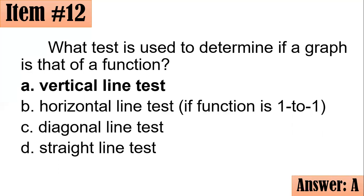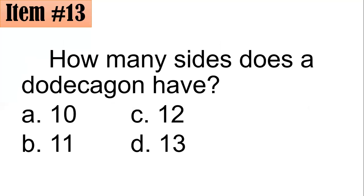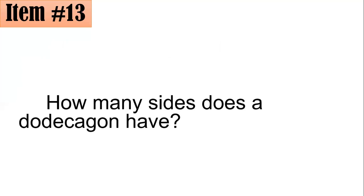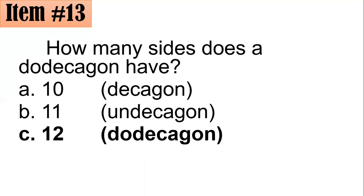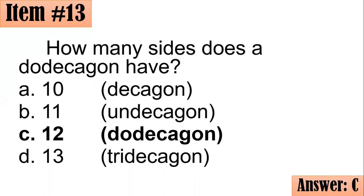Number 13. How many sides does a dodecagon have? Is it 10, 11, 12, or 13? We have to remember that a decagon has 10 sides. A polygon with 11 sides is what we call un-decagon. Other books call it hen-decagon. The correct answer here is 12. A dodecagon has 12 sides, whereas a 13-sided polygon is a tridecagon. Letter C.